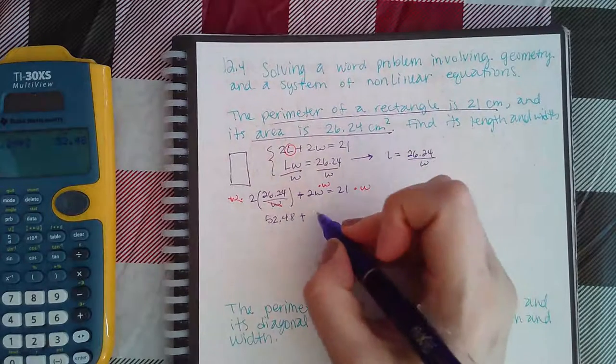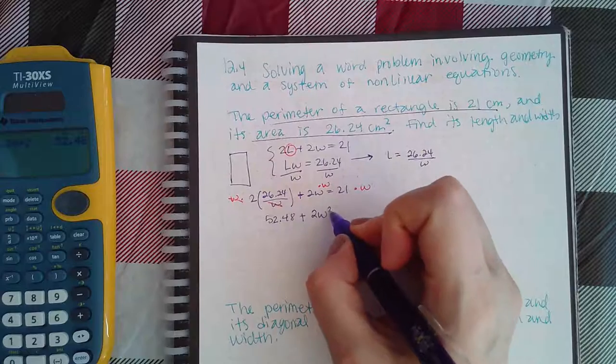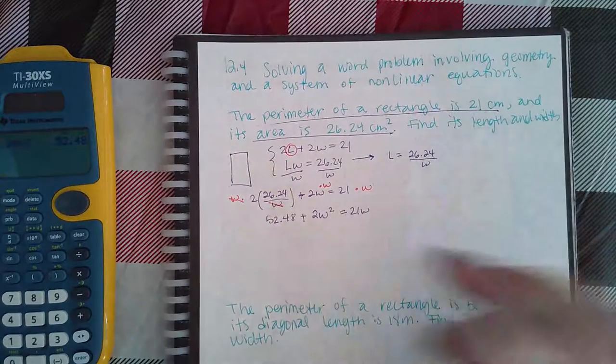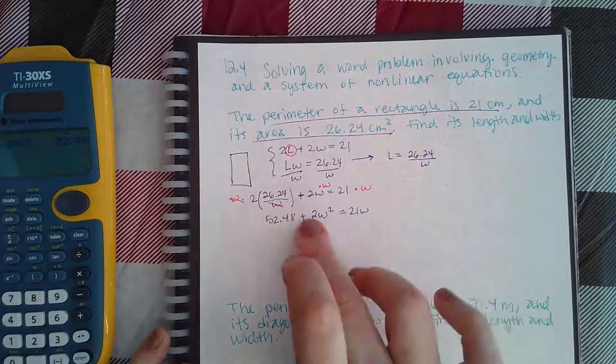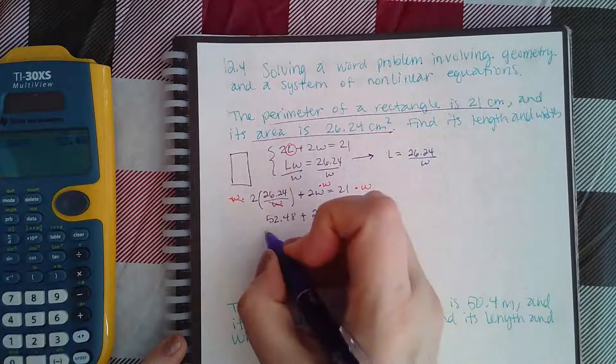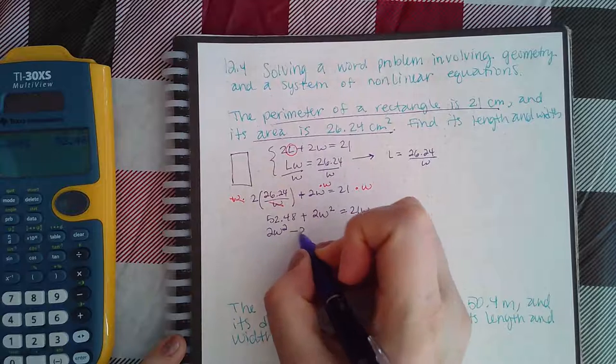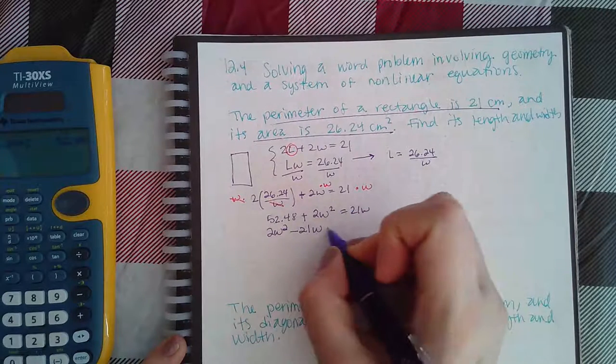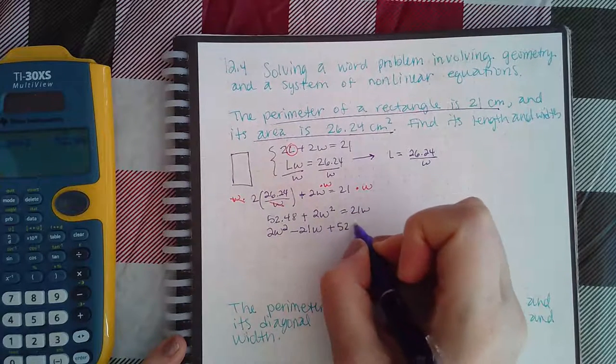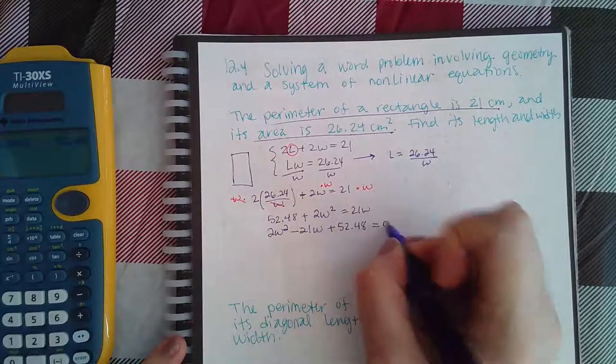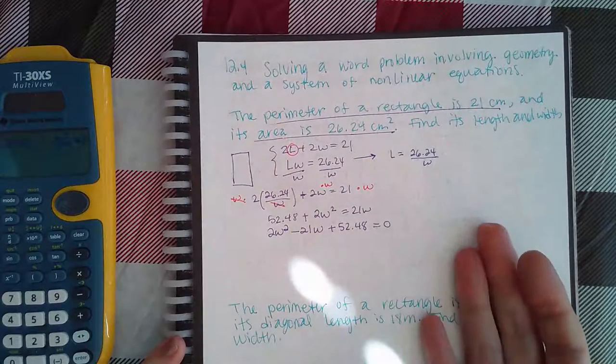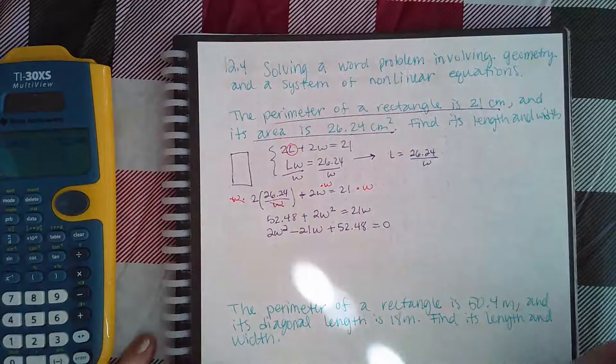This becomes 2W squared and this becomes 21W. I do have a square, so I'm going to minus this over. I'm going to put the order so the W squared positive, 2W squared first, then the negative 21W, and then the 52.48 equals 0.